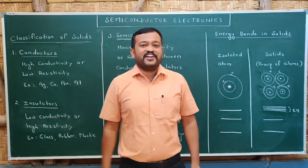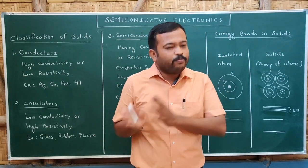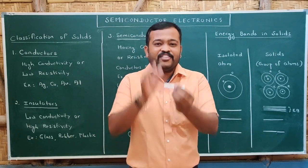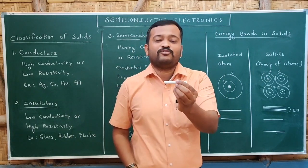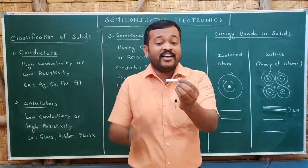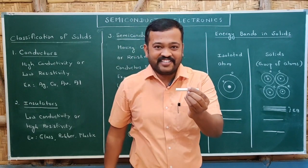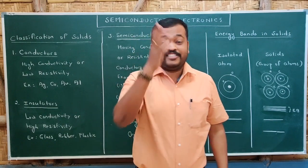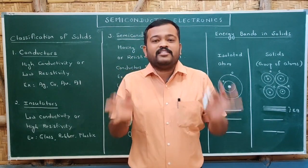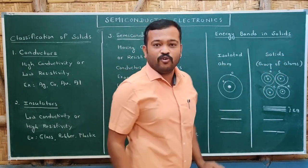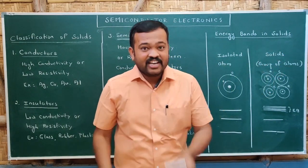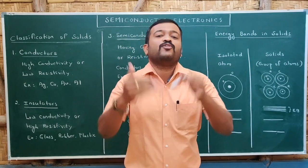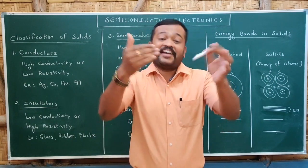What is the meaning of conductivity? Conductivity is a property of a substance which allows current to flow through it. If a solid allows more current to flow through it, we call it as having high conductivity. The opposite of that is resistivity. Resistivity is a property which resists the flow of current. If a solid does not allow current to flow through it and resists more, we call it as having high resistivity.